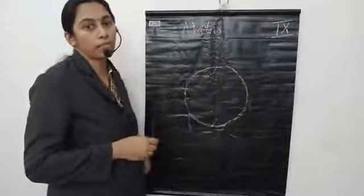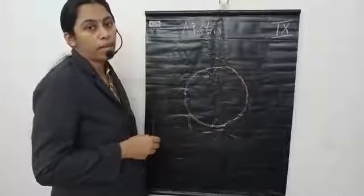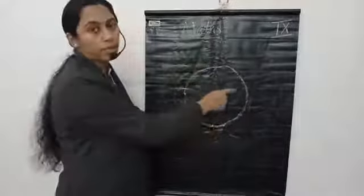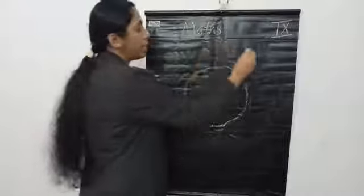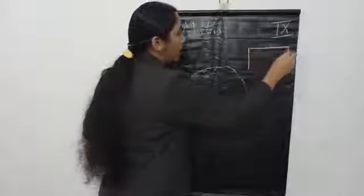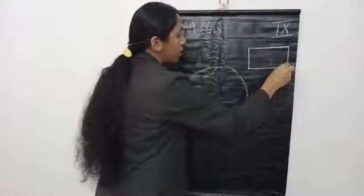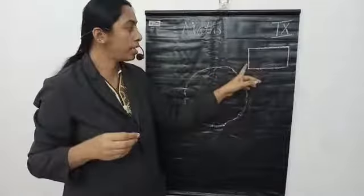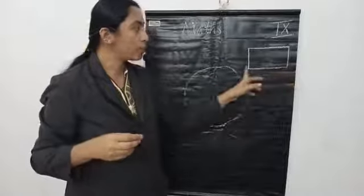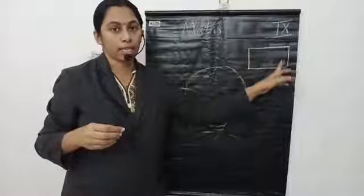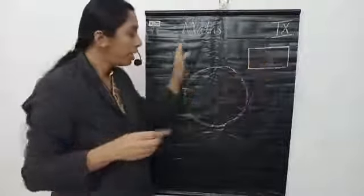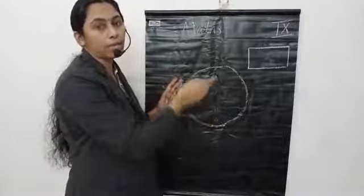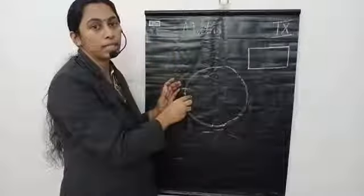Next is circumference. What is meant by circumference? Circumference is the complete length of the circle. In a rectangle or square we find its perimeter — the total length of the rectangle. In the same way, the total complete length of the circle is known as the circumference of the circle.